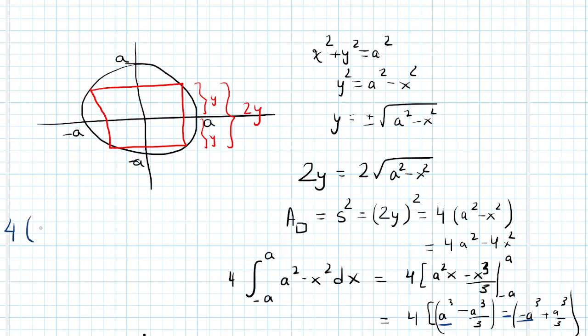So it's 4 times 2a cubed. And then negative A cubed minus A cubed will be negative 2a cubed over 3. Now we have to distribute the 4. So 4 times 2a cubed.